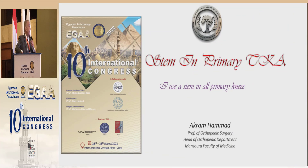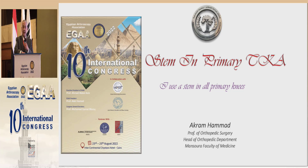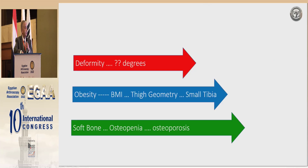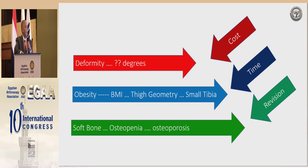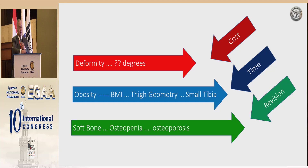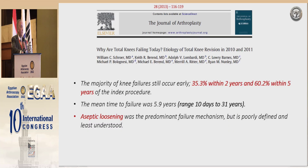Mr. Chairman, should we use a stem in all of our primary knee replacements? Stems are used in the presence of deformity, obesity, soft bone, PMI, size geometry, small tibia, and deformity — but what degree of deformity should prompt us to use a stem in a primary knee?